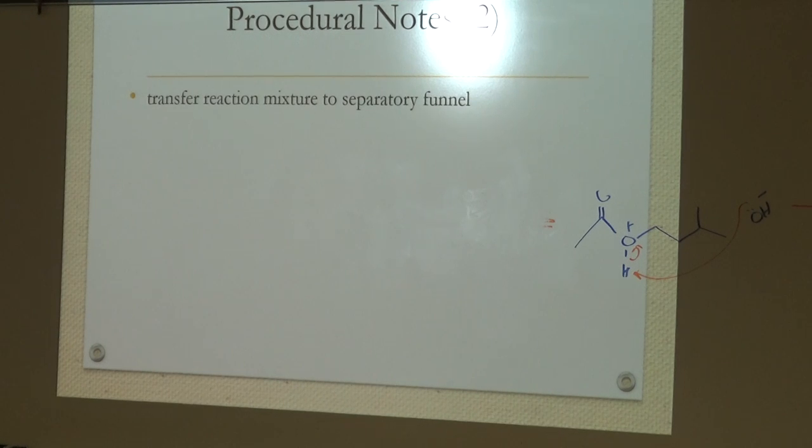The reaction then gets transferred to a separatory funnel. Add water. That's going to take away all that acid that might be around. And it should also help get rid of any unused acetic acid reagent and some of the isopentyl alcohol.